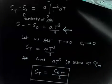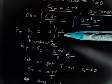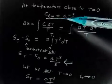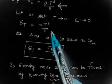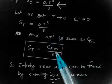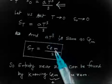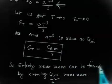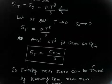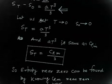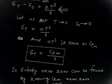Since Cpm = aT³, we have aT³ = Cpm. Substituting, St = Cpm/3. This is the entropy at any temperature near zero kelvin. The formula Cpm = aT³ is valid only near absolute zero — for example, at 1 K, 2 K, or 3 K. So entropy near zero kelvin is given by Cpm/3.